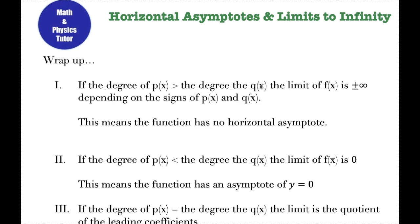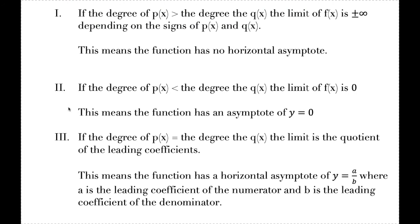Just to recap: if the degree of the numerator is greater than the degree of the denominator, the limit of the function is going to be positive or negative infinity depending on the signs of p(x) and q(x), and the function has no horizontal asymptote. If the degree of the numerator is less than the degree of the denominator, the limit is going to be zero and the horizontal asymptote is y equals zero — that function is going to get dragged to the x-axis. The third case: if the degree of the numerator is equal to the degree of the denominator, then the limit is equal to the quotient of the leading coefficients. If those leading coefficients are a in the numerator and b in the denominator, the horizontal asymptote would be y equals a over b.